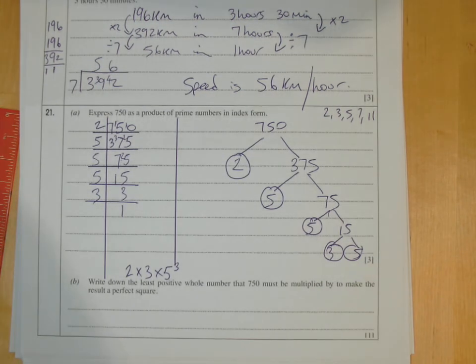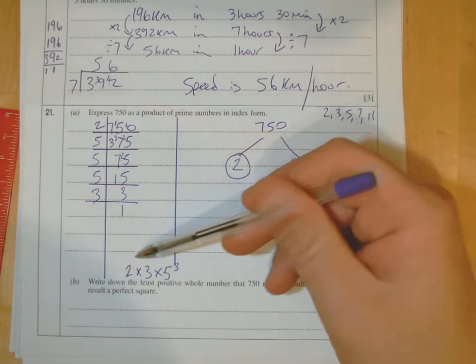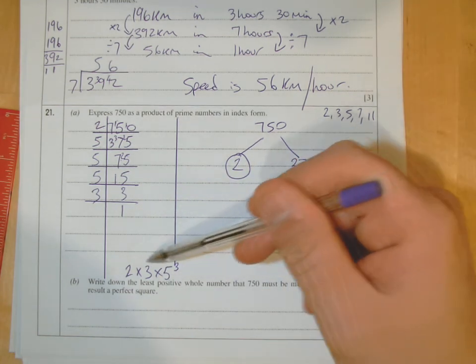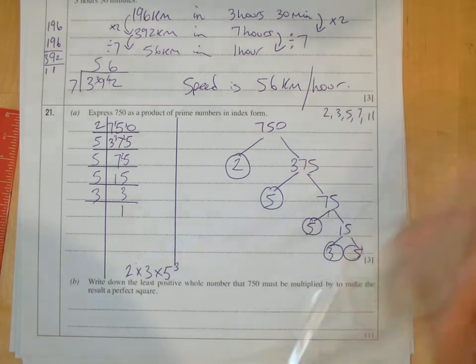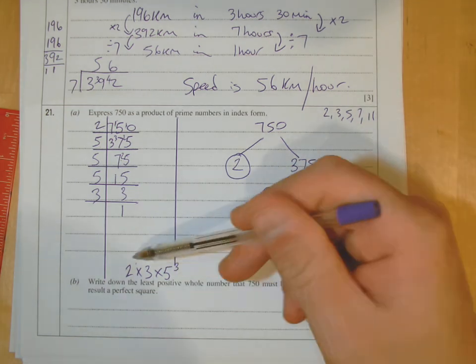Part B then: it says write down the least positive whole number that 750 must be multiplied by to make the result a perfect square. Now for it to be a perfect square, when you look at its prime factorization here, all the powers must be even. It's so important to remember that. All the powers must be even.